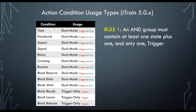Which also means we can have more than one state element — multiple state elements — but we must have at least one. Choosing a state element is easy enough. If we look at the table, we can select from any of the dual mode elements; they can be used as states.